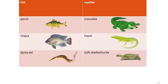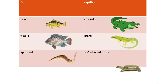Again, we have two kinds: fish and reptiles. Fish like perch, tilapia, and spiny eel. Reptiles like crocodile, lizard, and soft-shelled turtle. So, crocodile is a reptile, and tilapia is a fish. Lizard is a reptile. Soft-shelled turtle is a reptile.